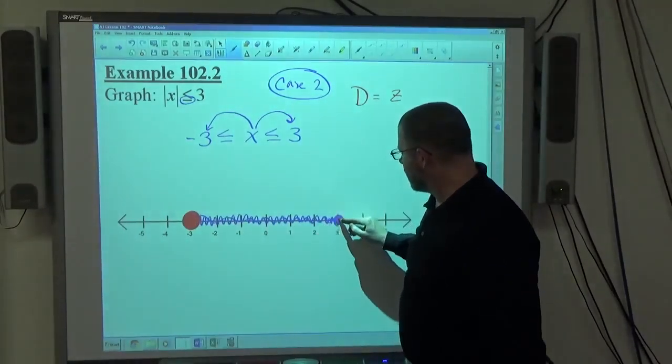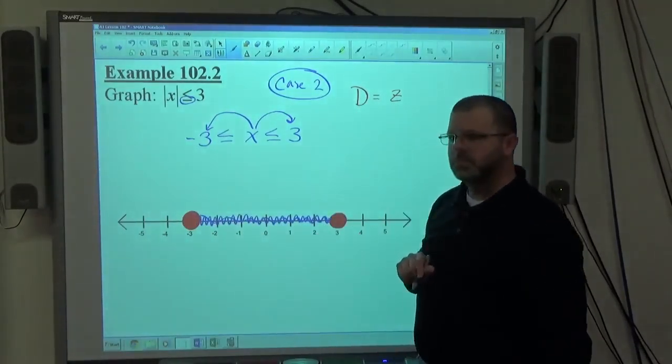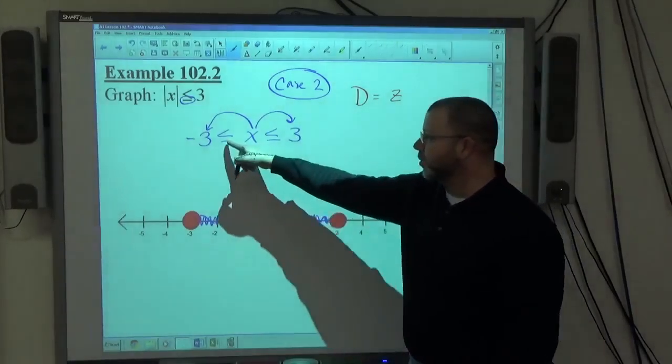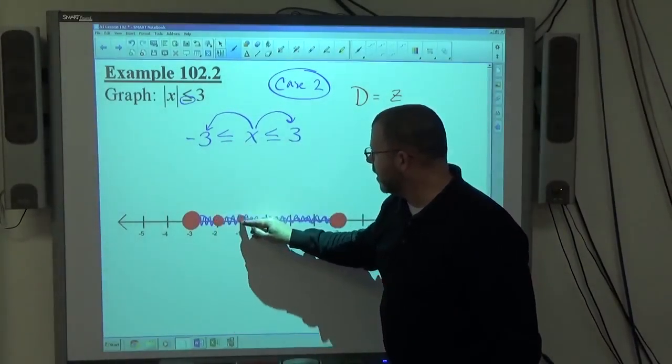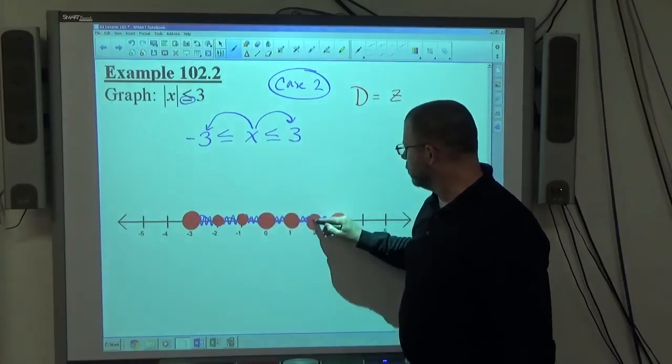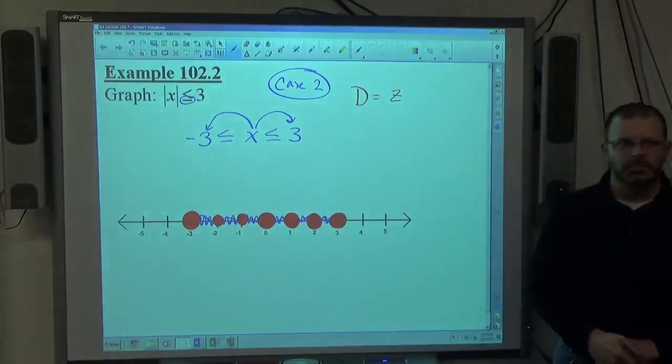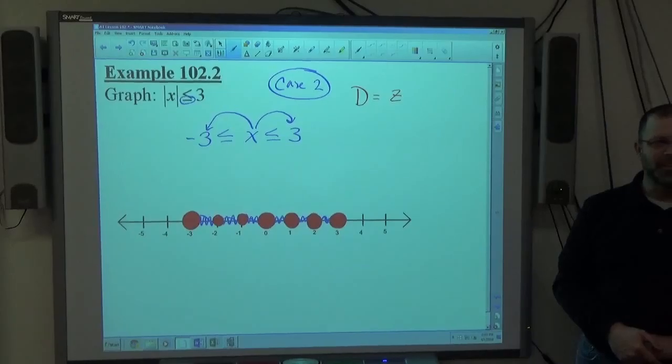Still negative 3 and positive 3, because those are integers. And equals means equals. But then negative 2, negative 1, 0, 1, 2. Those are big dots, aren't they? They'd be that big.